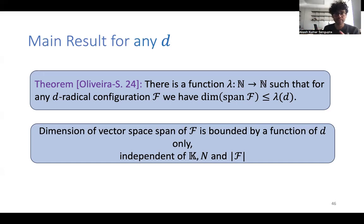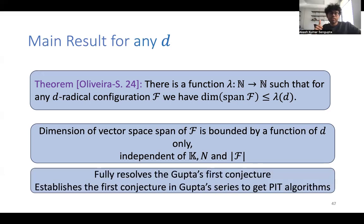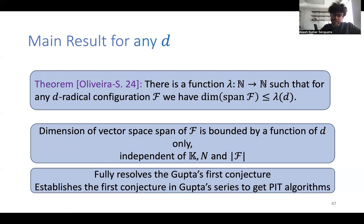This result fully resolves Gupta's first conjecture in his series of conjectures. Gupta's series was designed to eventually yield polynomial-time algorithms for the polynomial identity testing problem. Our result establishes the first step — the building block — toward the further conjectures, which are still open and ongoing work.